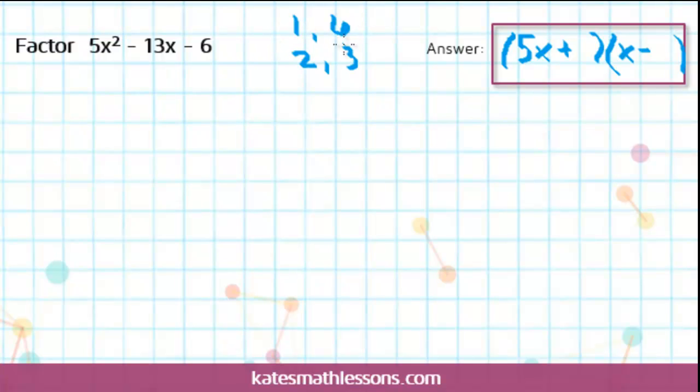So let's just try one and see if it works. Let's start with the 1 and the 6. So we'll try 5x plus 1 and x minus 6. If I distribute this through using FOIL, I would get 5x squared from the first. I would distribute the 5x to the minus 6 and get a negative 30x for the outsides. The insides would give me a plus 1x and then the last would be a minus 6.